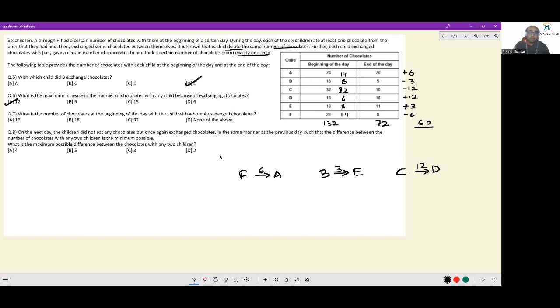Next. What is the number of chocolates at the beginning of the day with the child with whom A exchanged chocolates? A exchanged chocolates with F and number of chocolates with F at the beginning of the day was 24. So 16, 18, 32, none of these. So answer should be option D.